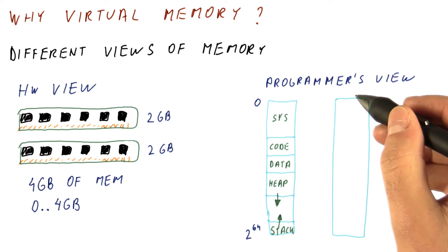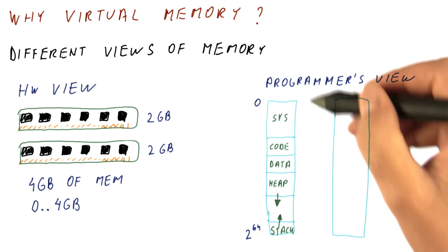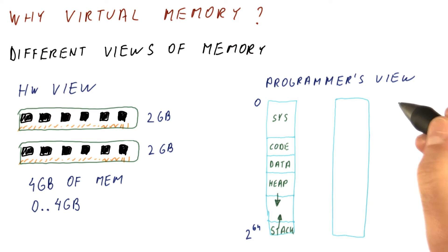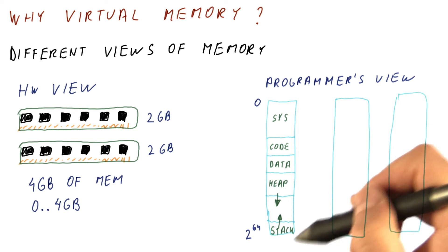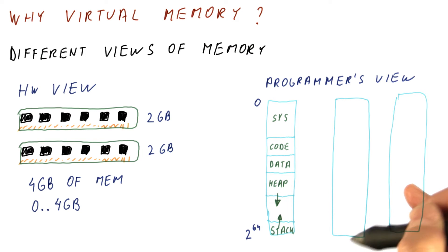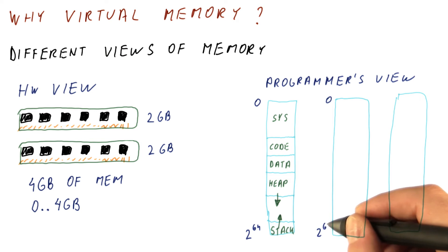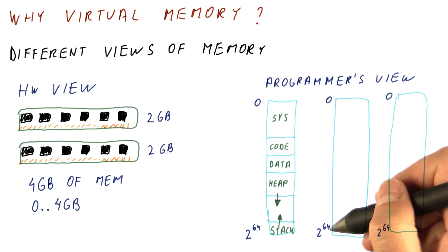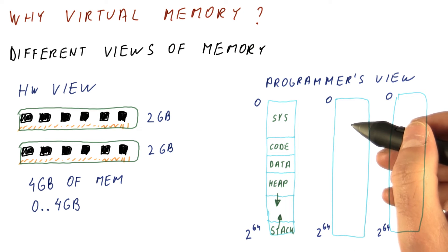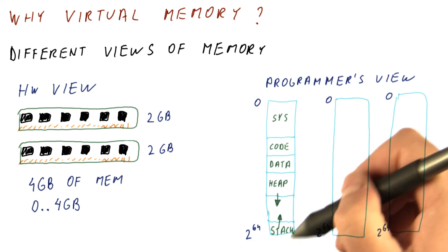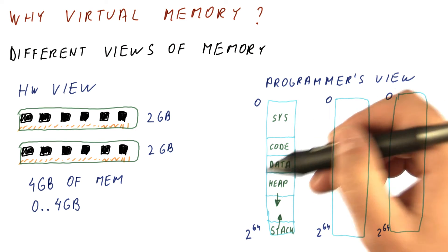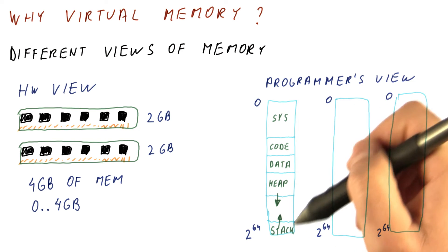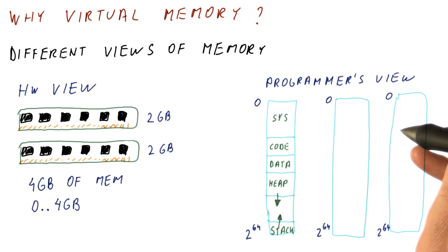Things are actually much more complicated, because we typically don't run only one program on a machine. We actually are simultaneously having multiple programs run — you might have something that browses files, an mp3 player playing in the background, and a word processor. Each of these sees an address space that begins at zero and ends at a very large address. We don't want to write programs so that each needs to run as the first or second program in the system; you want to write the program as if it was the only program, and then just run multiple programs like that.